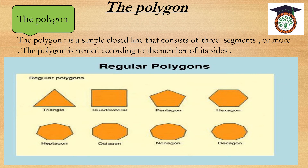Regular polygons — that means the polygons which have equal angles and equal sides — include: triangle, quadrilateral, pentagon, hexagon, heptagon, octagon, nonagon, and decagon.